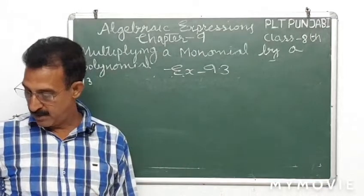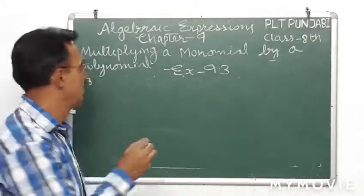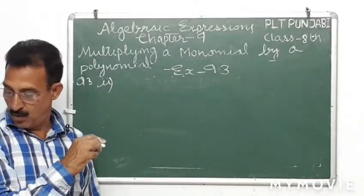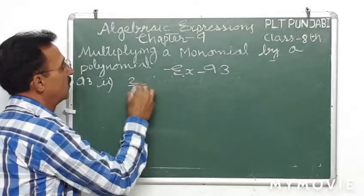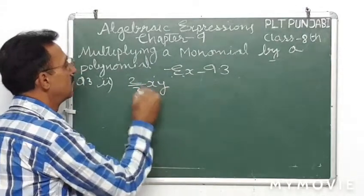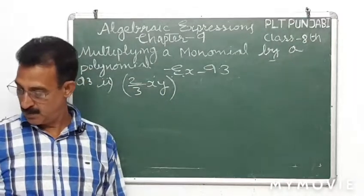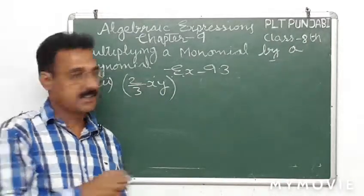Part B of the question: two over three xy into minus nine over ten x square y square.